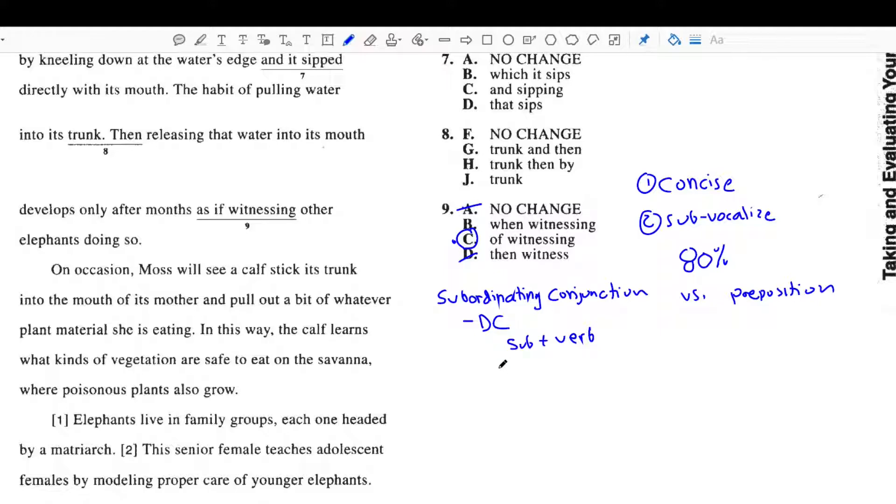Answer choice A has as if. This is a subordinating conjunction. And, B has when. Again, this is also a subordinating conjunction. So, they're signaling I'm starting a dependent clause. And, remember, a dependent clause is an incomplete thought, but it's still a thought. So, I would be saying I'm starting a new thought.